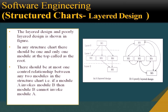This slide represents the layered design and the poorly layered design. The second figure should be avoided, while the first figure showing layered design should be followed. In any structure chart, there should be one and only one module at the top, called the root module. M1 is shown as the root module, and M2, M3, M4, and M5 are sub-modules. There should be at most one control relationship between any two modules. For example, if module A invokes module B, then module B cannot invoke module A.